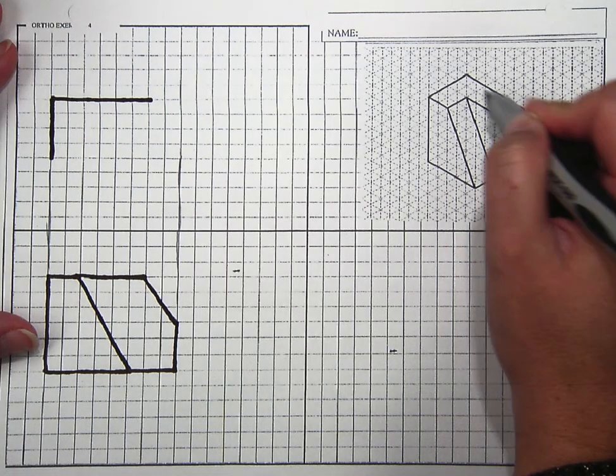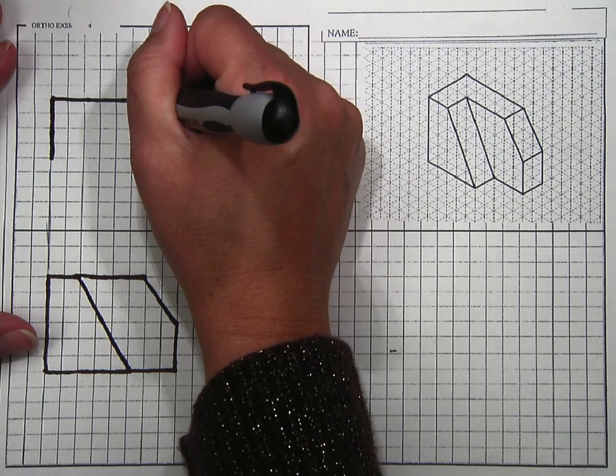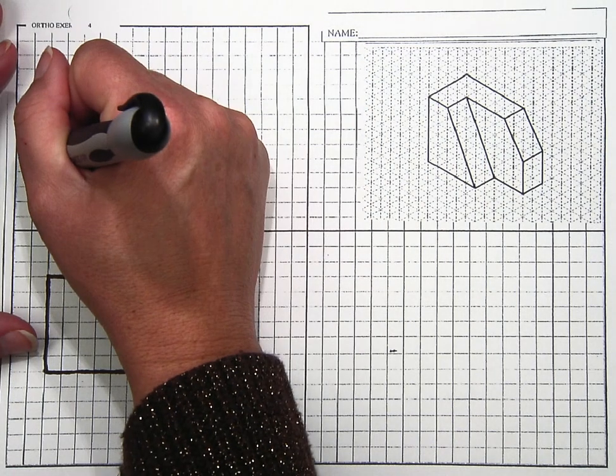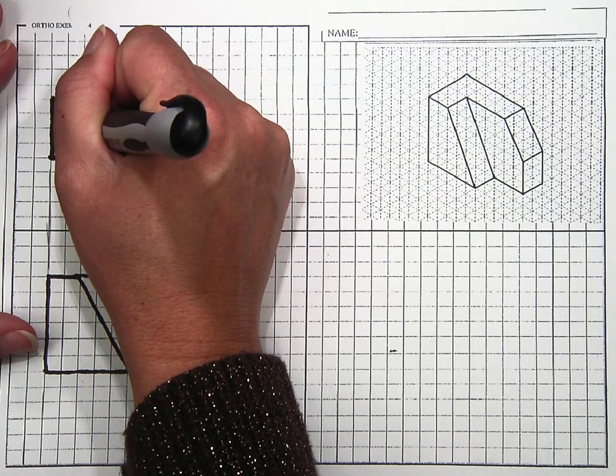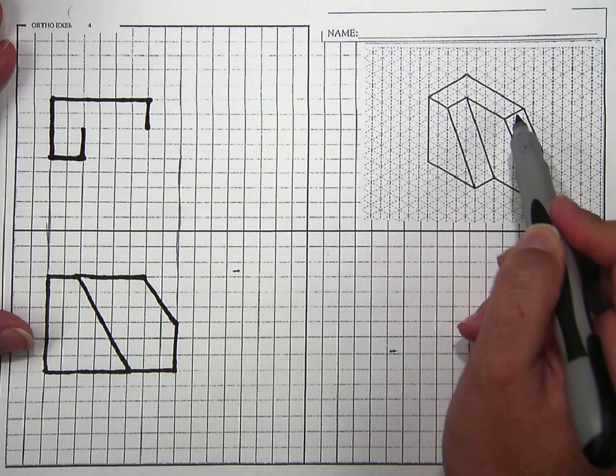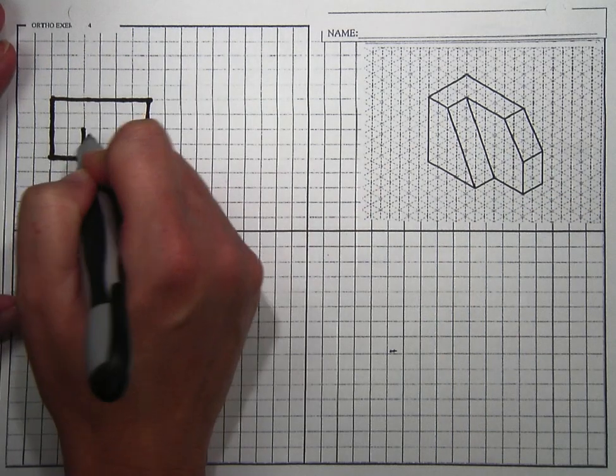I'm going to go ahead and draw this surface first. So 2, 2, 2, 2, 2, and 2. And then we connect these.